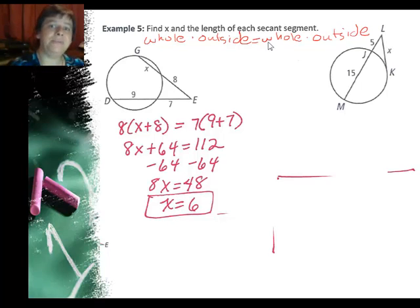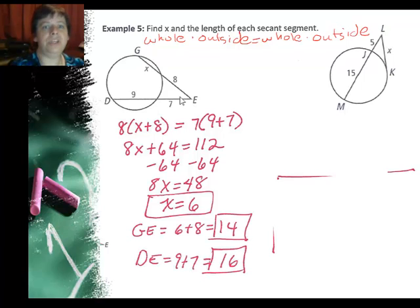Now it asks for the length of each secant segment, so I need to find this segment GE and DE. Well GE is 6 plus 8, which is 14, and DE is 9 plus 7, which is 16.